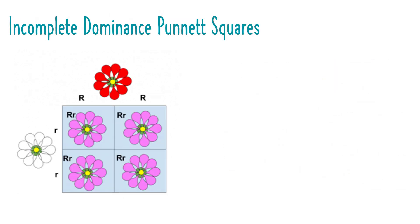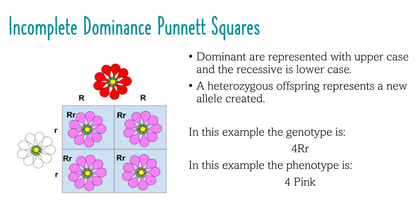Incomplete dominance is the blending of two alleles. The classic example is the red and white snapdragon flower. Red snapdragon flowers are dominant over white snapdragon flowers. When a homozygous red is crossed with a homozygous white, all offspring will produce the blended colour — in this case, pink. The uppercase letter still represents the dominant trait and the lowercase represents the recessive. The heterozygous offspring will reflect the blended colour.